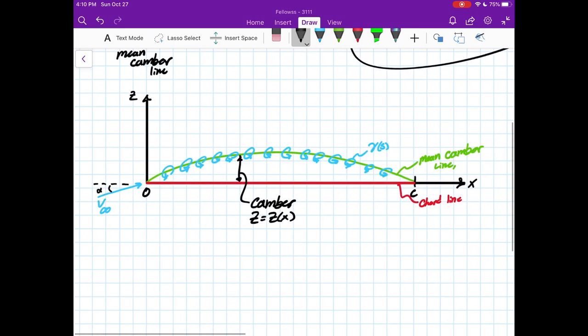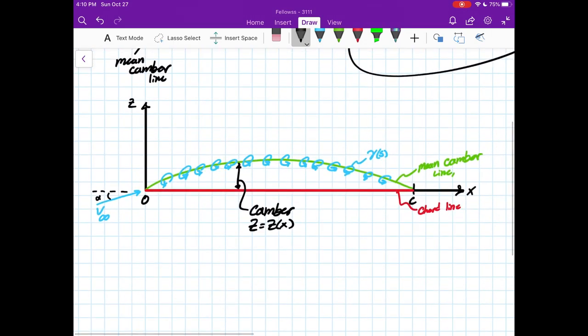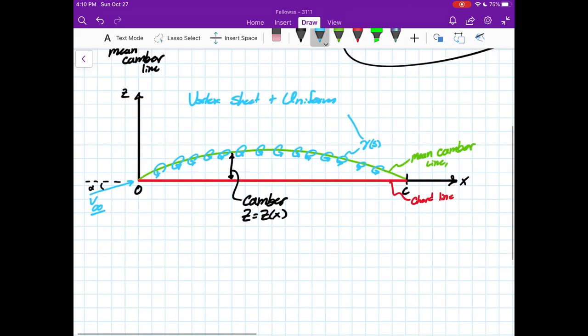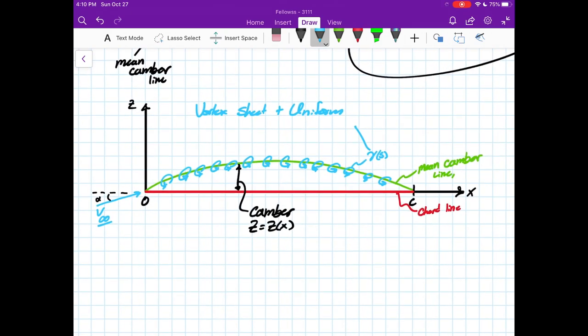All right, so I have another diagram down here, and we're going to be using the vortex sheet plus uniform flow. This is our vortex sheet, this is our uniform flow. When we have a model set up like this where we have multiple elementary flows, so vortex sheet is an elementary flow, uniform flow is also elementary, we need to establish some boundary conditions.